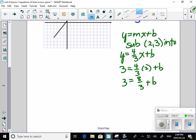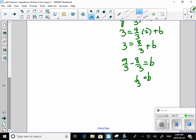I would subtract 8 thirds from both sides to get my B, which is 1 third. Final answer. It is y equals 4 thirds x plus 1 third. And that's the form we liked the most in grade 9. We call that slope y-intercept form.